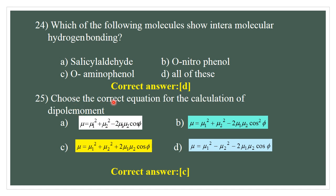Question number 25. Choose the correct equation for calculation of dipole moment. Mu = √(mu₁² + mu₂² + 2·mu₁·mu₂·cos θ). This is the correct equation used to calculate the dipole moment. The correct answer is C.